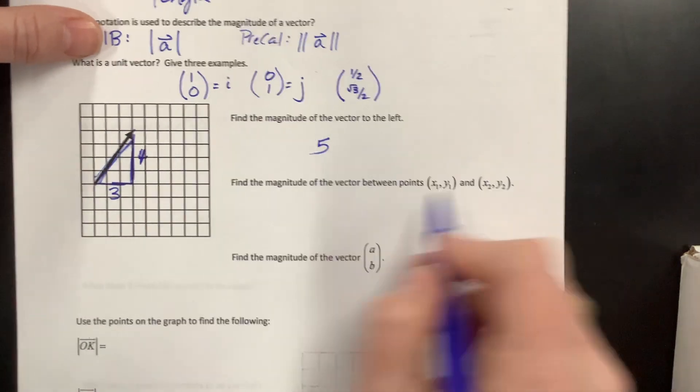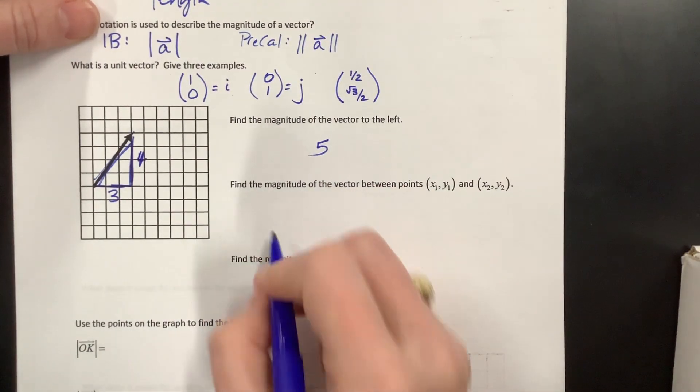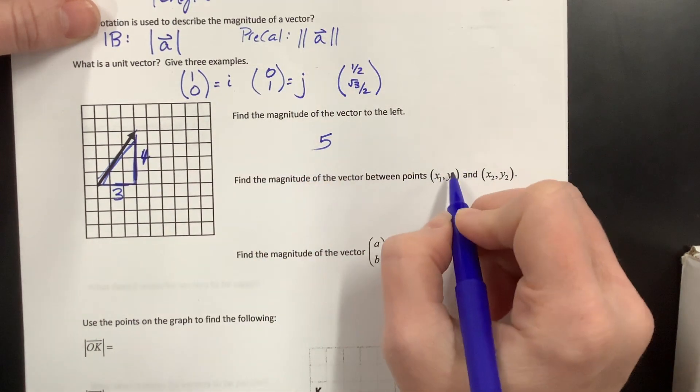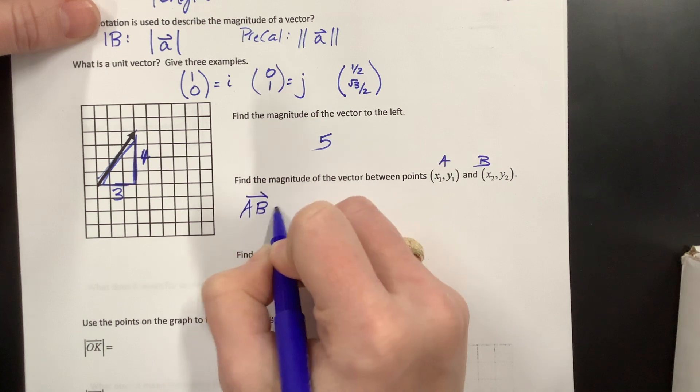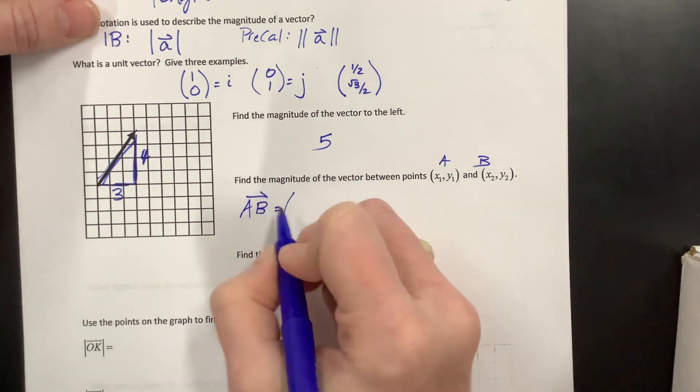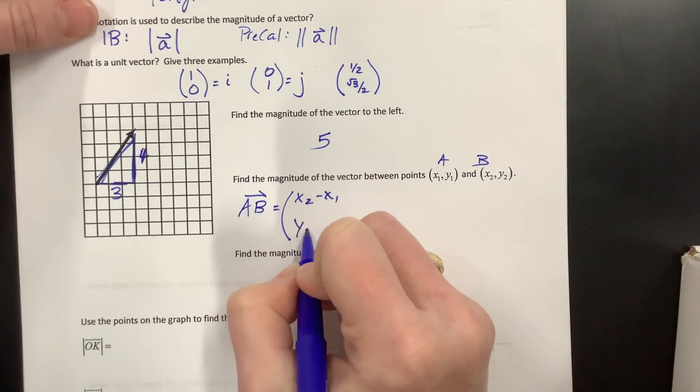Okay, so if I have the vector between these two points, then basically all I need is, well, let's say that this, let's call this A, let's call this B. So vector AB, the vector itself would be equal to, well, X2 minus X1, and then Y2 minus Y1.